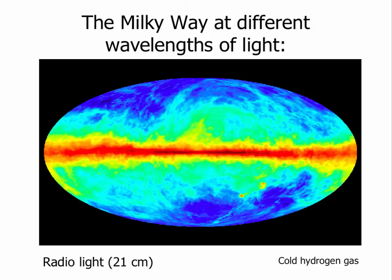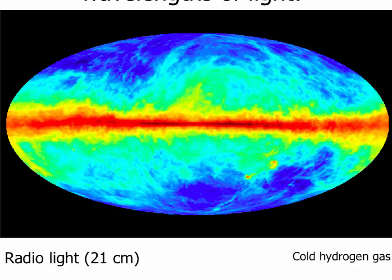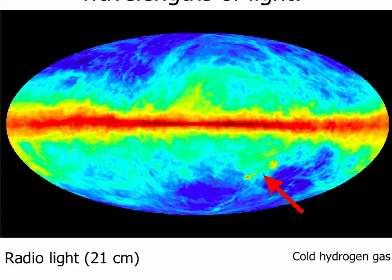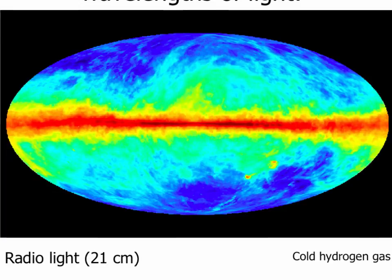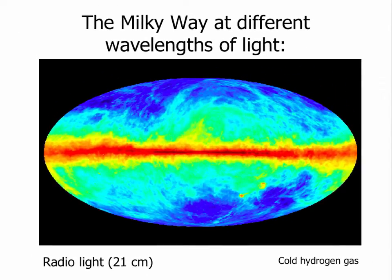This map shows the Milky Way at a very particular wavelength of radio light: 21 centimeters. At 21 centimeters, cold hydrogen gas is very good at emitting light. So when we look at the galaxy at this wavelength, we are seeing where hydrogen gas is — and since hydrogen is what makes up new stars, we can tell where new stars may be forming. Dark red means lots of radio waves, dark blue means very few. Most of the 21 cm radiation comes from the band of the Milky Way. The large and small Magellanic clouds have a lot of hydrogen as well, with even a faint tail between them from a recent close pass. So 21 centimeter light is a very special wavelength that allows us to learn a lot about where stars may form in galaxies.